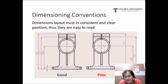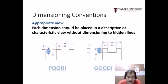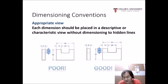The right hand side shows poor dimensioning where all the dimensions are placed randomly. Each dimension should be placed in the descriptive or characteristic view without dimensioning to hidden lines. A poor example on the left figure shows the dimension of 10 pointing to a hidden line — you should instead place the 10 on the solid line, as shown in the right hand figure.